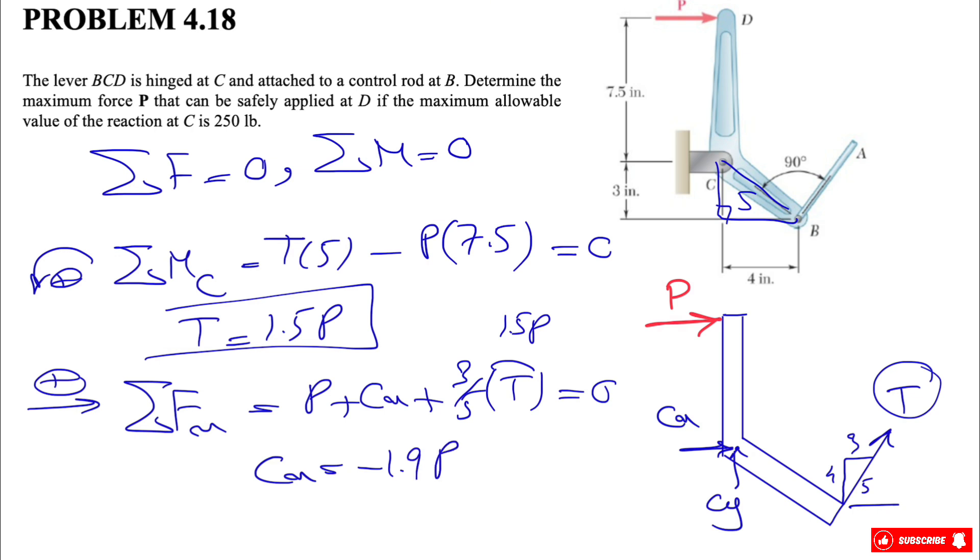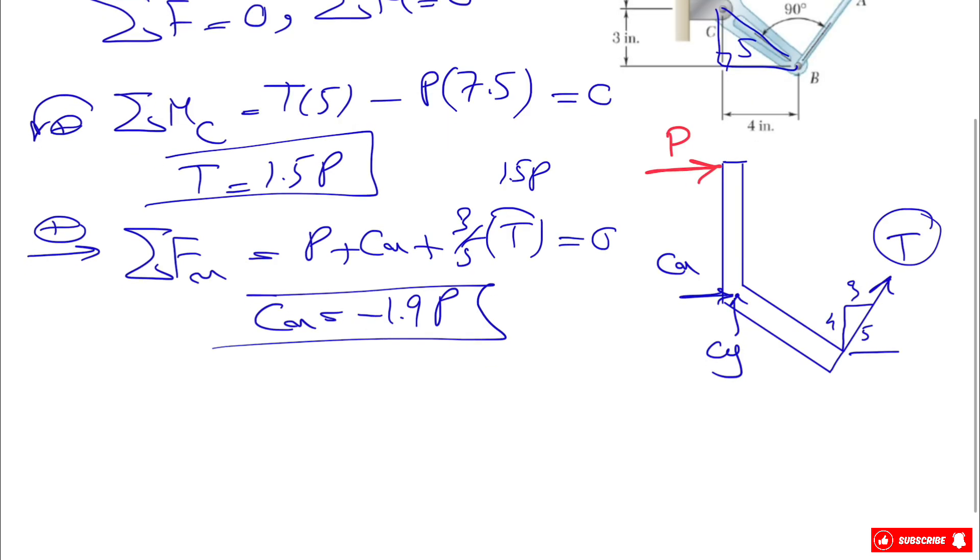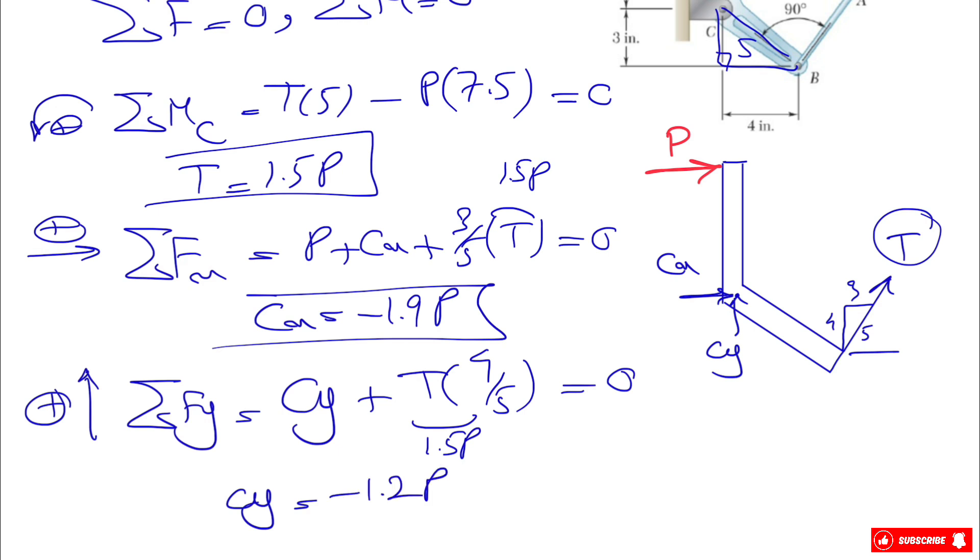Cx will be minus 1.9P. If we go to our Fy equations, this will be the positive direction. We have Cy plus the y component of T, which this time will be T times 4 divided by 5. Same thing, our T will be 1.5 times P, and we can find Cy based on P, which will be negative 1.2P.